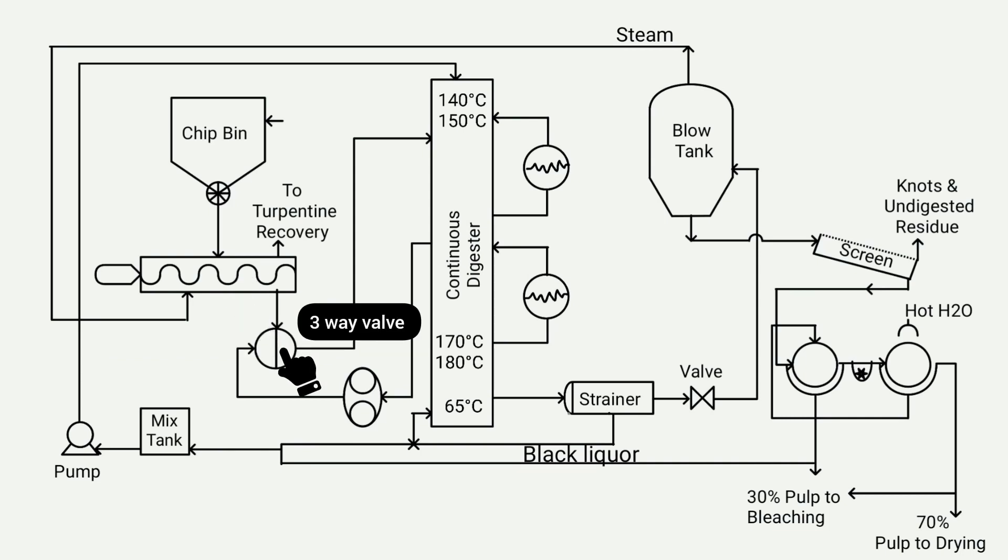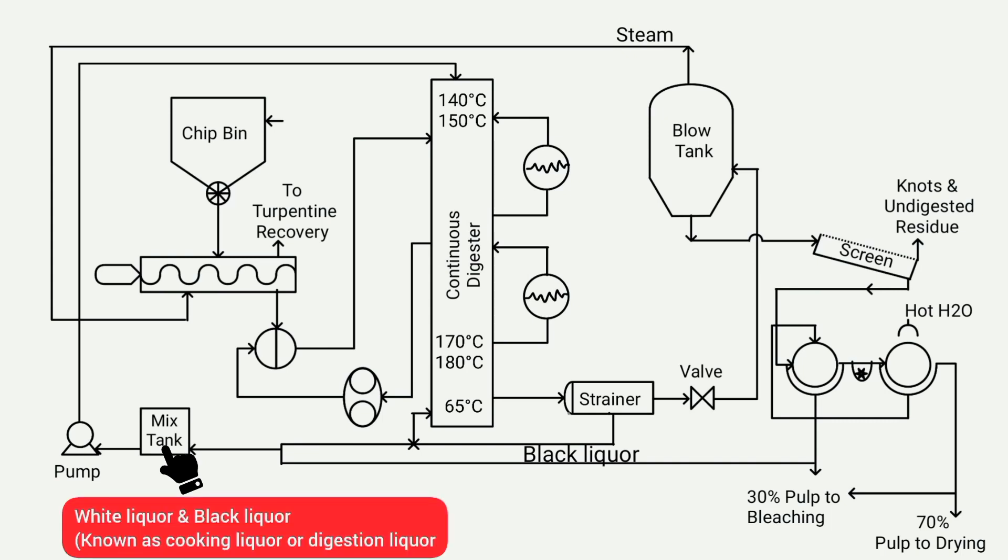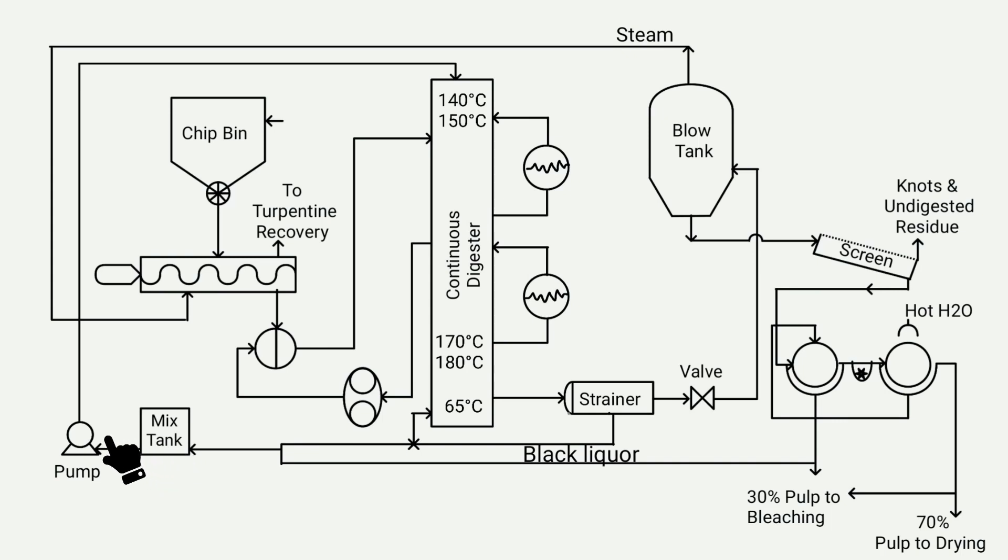Then comes the three-way valve, the working process of which we will learn in this video. Also, there is the recirculating pump, which continuously recirculates the liquor during the process. And this is called the mixed tank; inside it stores white liquor for the process as well as black liquor.